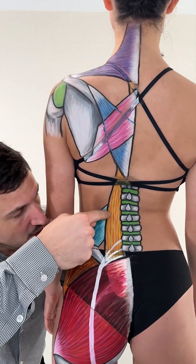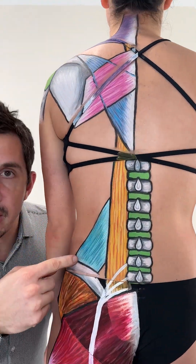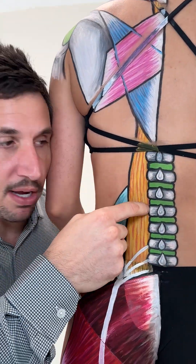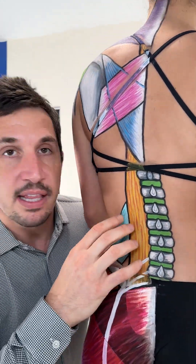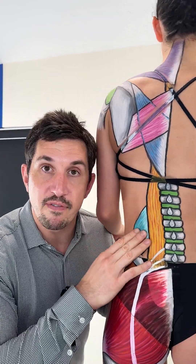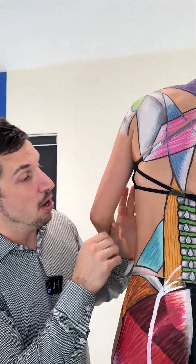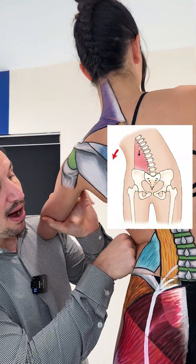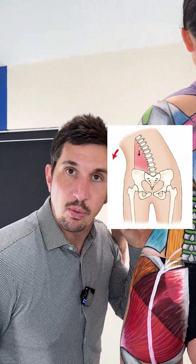You need to know that this quadratus lumborum muscle right here, the deepest muscle in your back, can be the source of your pain. It can also pull your whole body and shift it off to one side.